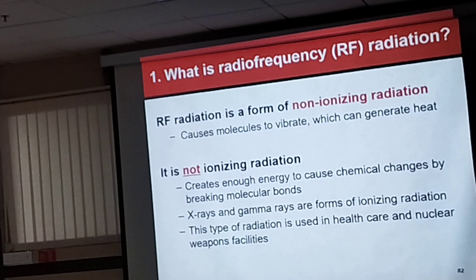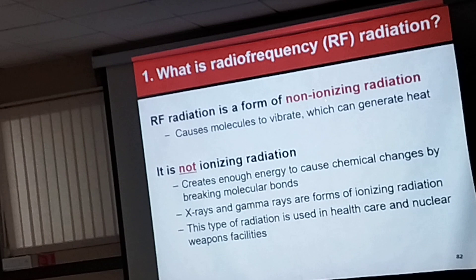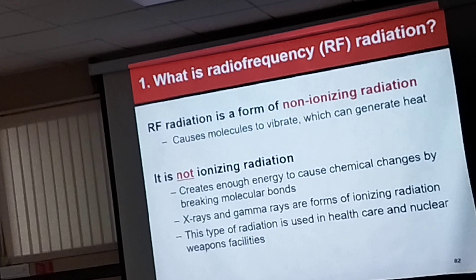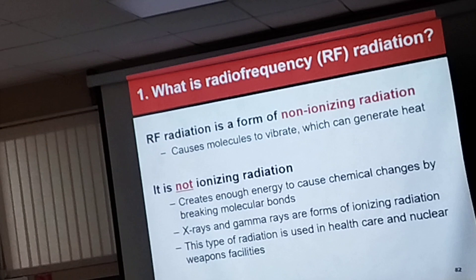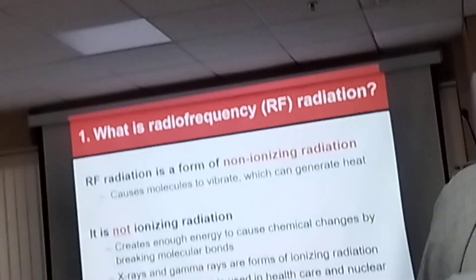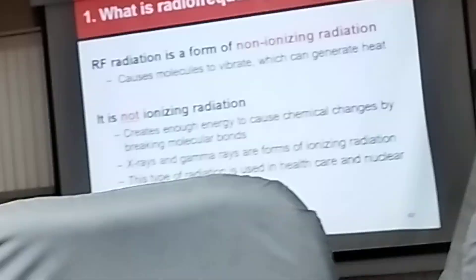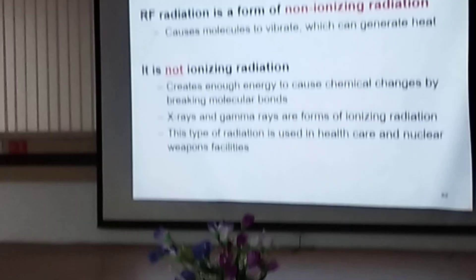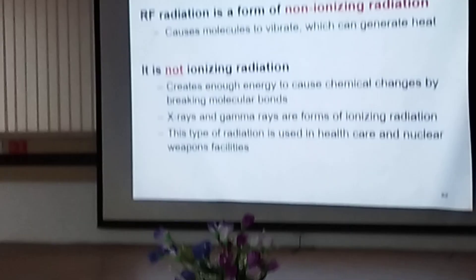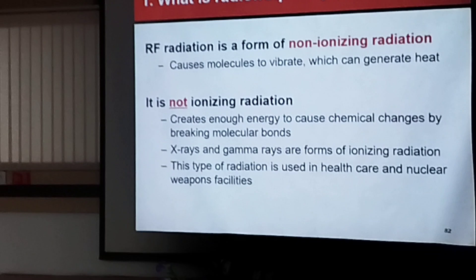Generally, RF radiation is a form of non-ionizing radiation. It causes molecules to vibrate and generates heat in the body of any human being or creature. More dangerous things are ionizing rays such as x-rays and gamma rays. That is why in scanning centers, pregnant women are not allowed inside x-ray centers and MRI machines, because they generate a huge amount of RF exposure. These are various ionizing and non-ionizing frequency bands.